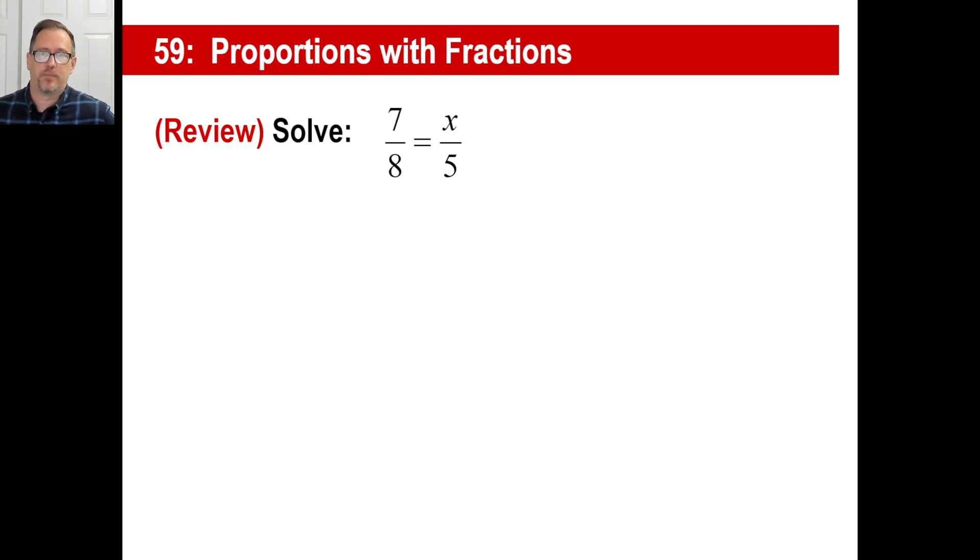Hey y'all! Let's take a look at proportions with fractions, and this isn't really a big deal. First off, let's review. Do you know how to do this one? What's the method? You just cross multiply, right? So you got 8 times x is 8x. 7 times 5 is 35. You divide by 8 for both sides and x is 35 over 8. There you go. No big whoop.